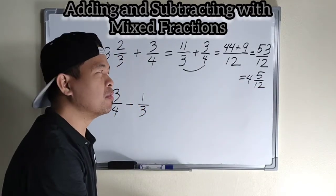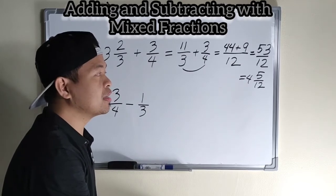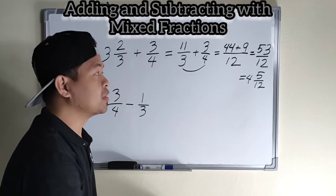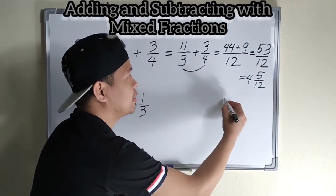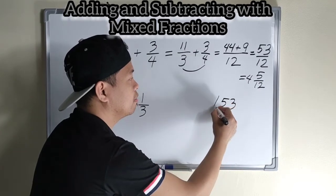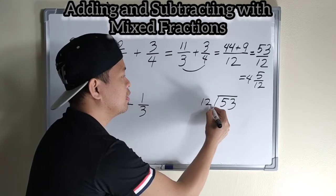Maestro, paano ba nakuha yung four and five over twelve? By using the long method of division. Try natin. Pakita ko sa inyo.